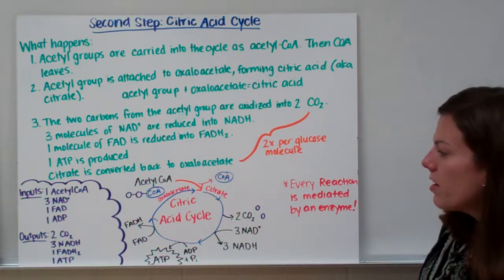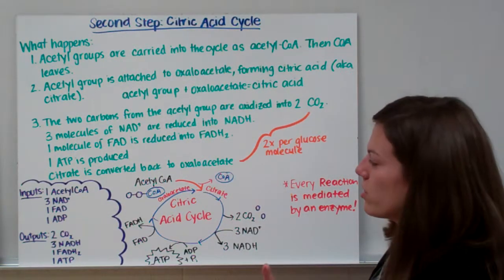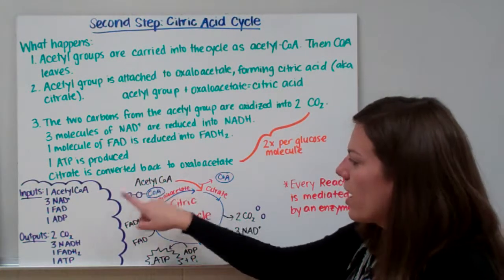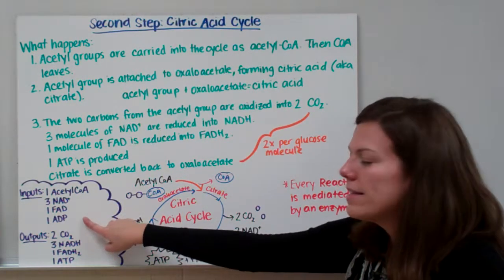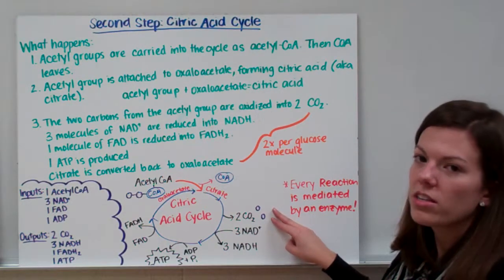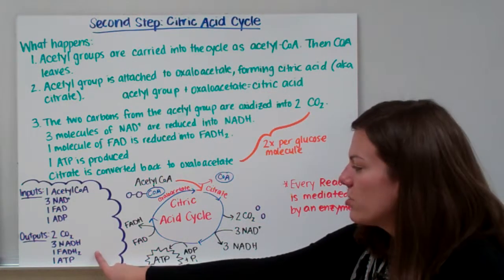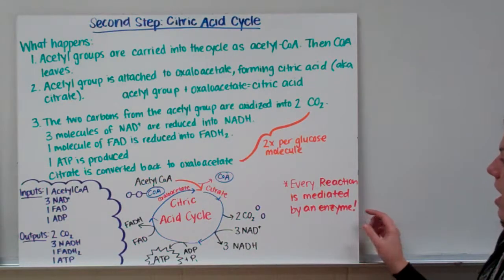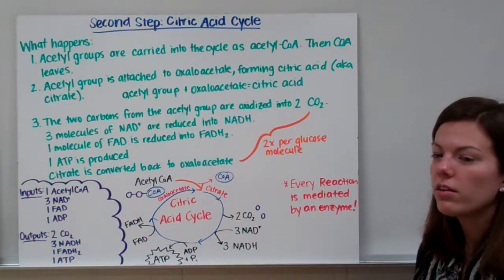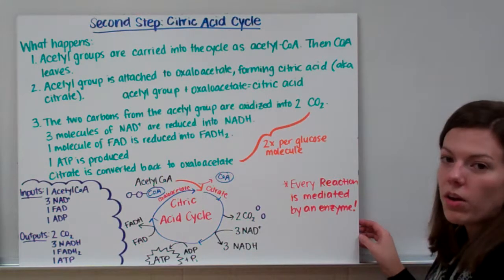The cycle keeps going. Our inputs per turn are one acetyl-CoA, three NADs, one FAD, and one ADP. Our outputs are two carbon dioxides, three NADHs, one FADH2, and one ATP. This happens twice per glucose molecule since we get two acetyl-CoAs per glucose. Every step of the reaction is mediated by an enzyme; if those enzymes are not working, this process will not work.